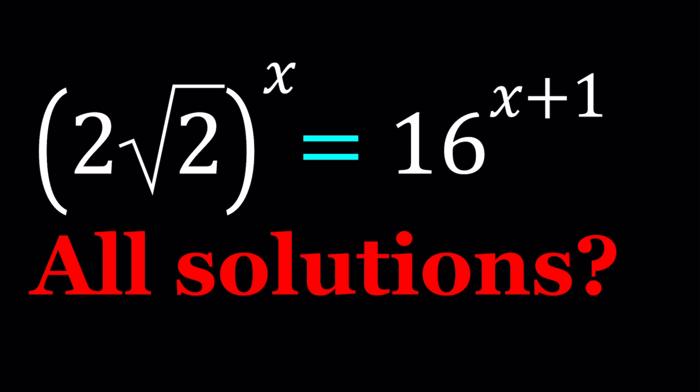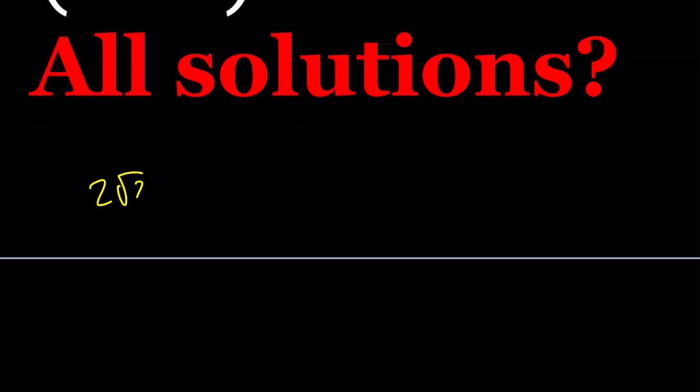So let's go ahead and take a look at the usual scenario, the real deal, and then we're going to check if there's any complex solutions. So 2 root 2 is basically 2 times the square root of 2, and square root of 2 can be written as 2 to the power of 1 half. Therefore, this product can be written as 2 to the power of 3 halves.